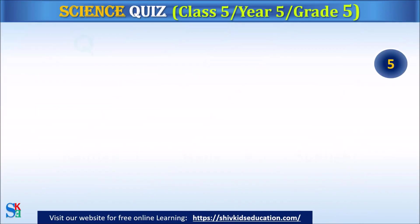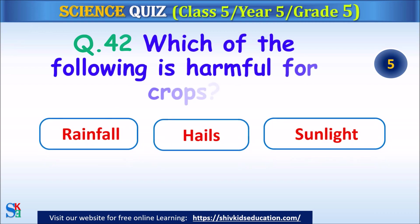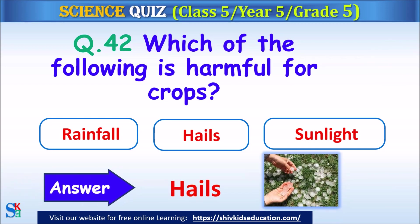Question 42: Which of the following is harmful for crops? Rainfall, hails or sunlight? The answer is hails.